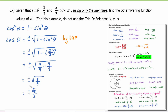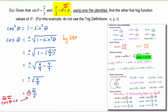Now let's determine whether cosine is positive or negative. We were given that theta is between pi over two and pi, which means it is in quadrant two. Because we are in quadrant two, we know that cosine is negative. So we choose the negative sign, and cosine of theta equals negative radical five over three.